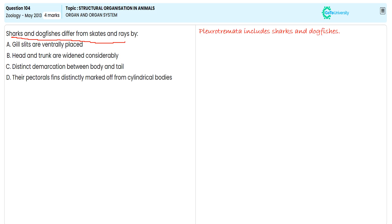Their body is shaped like a spindle. Their pelvic and pectoral fins are distinct from their body. Because of the laterally positioned gill opening, we call these sharks and dogfish Pleurotremata.